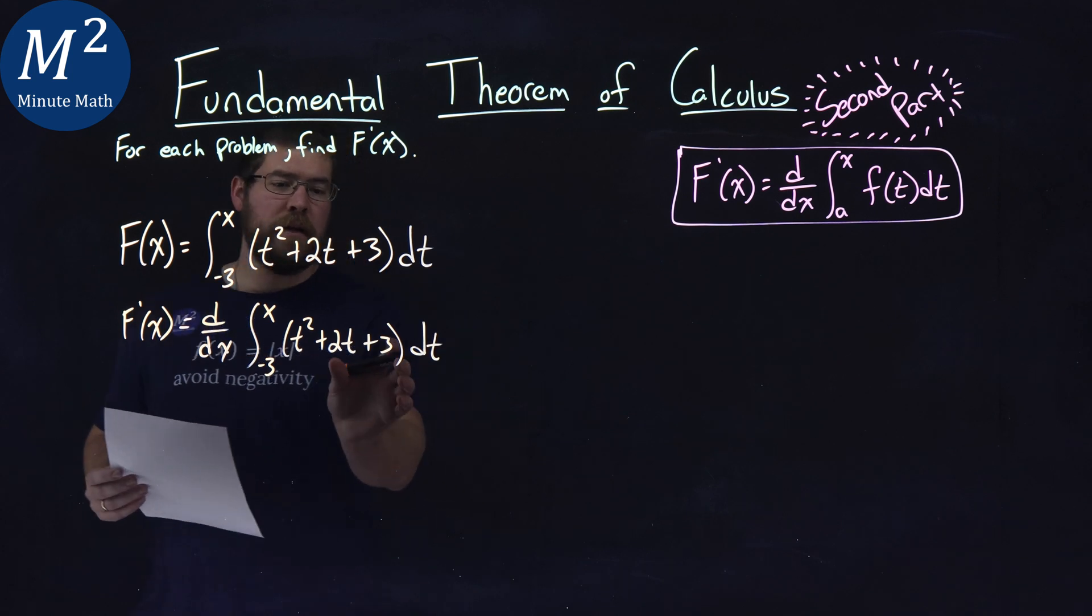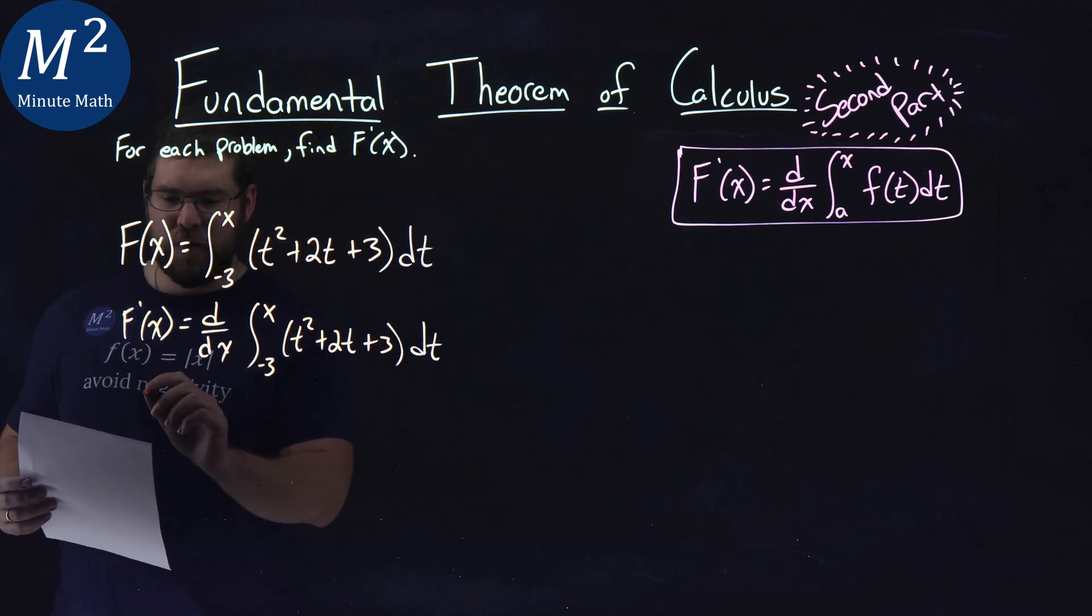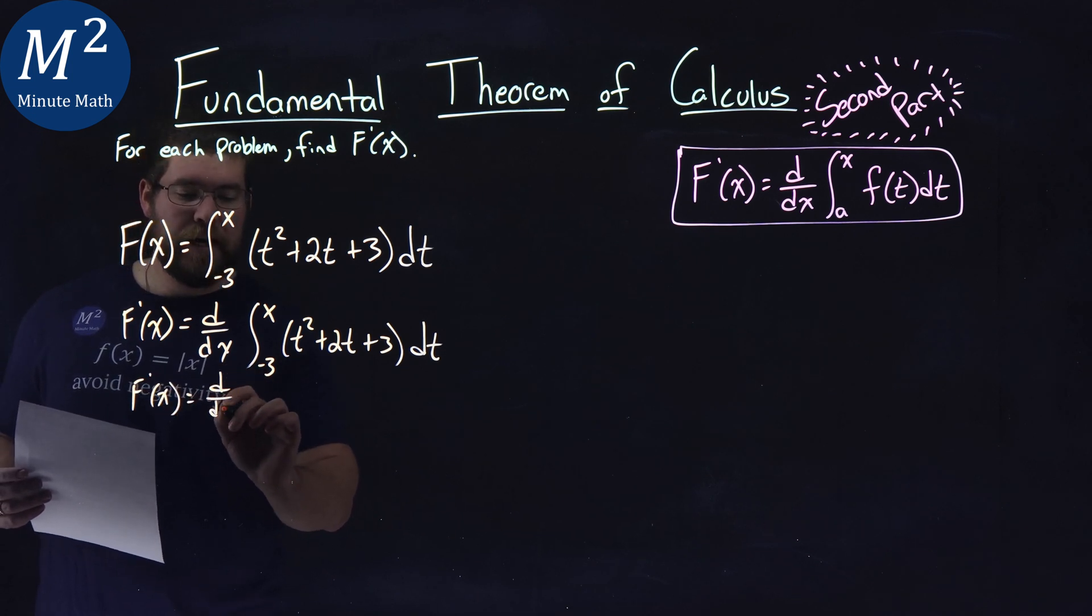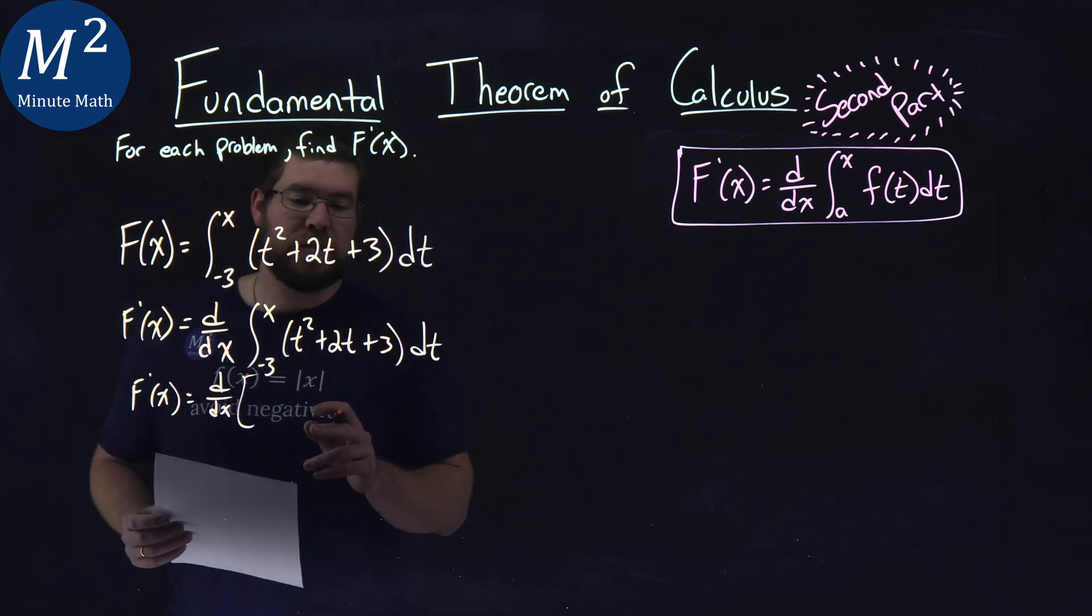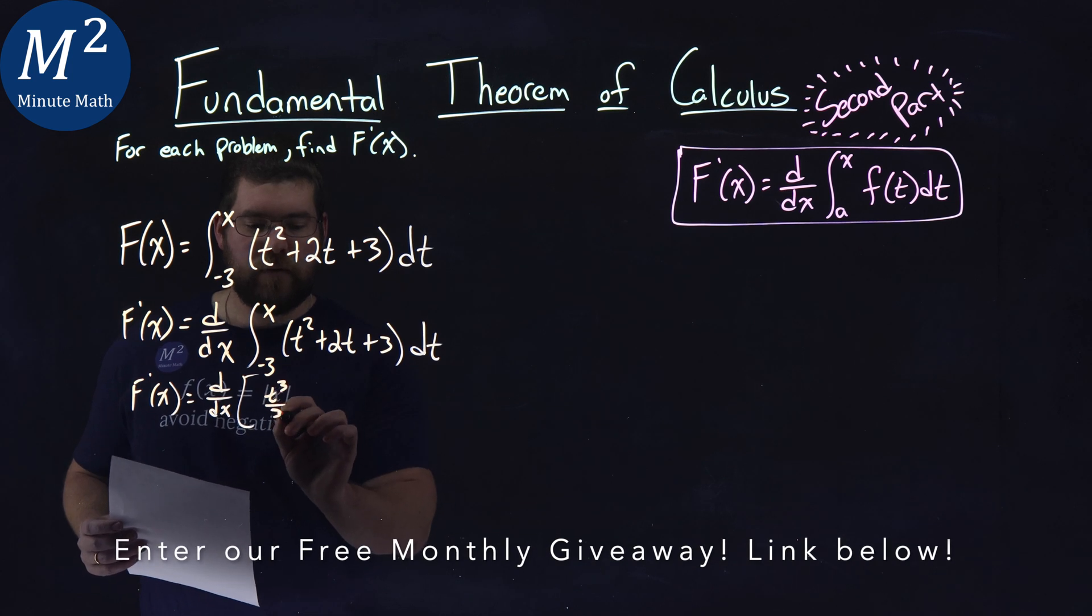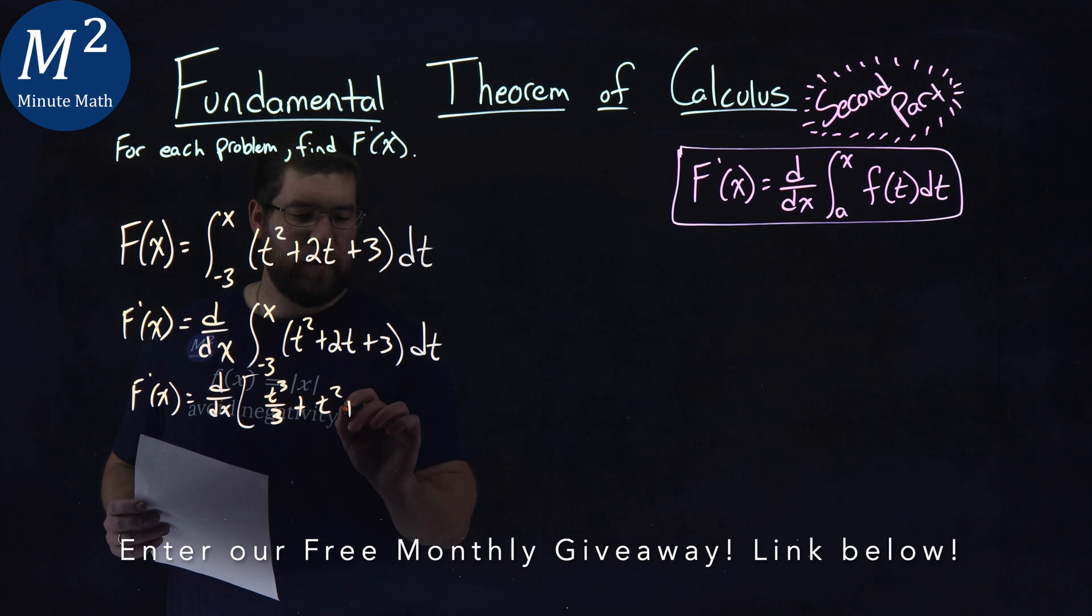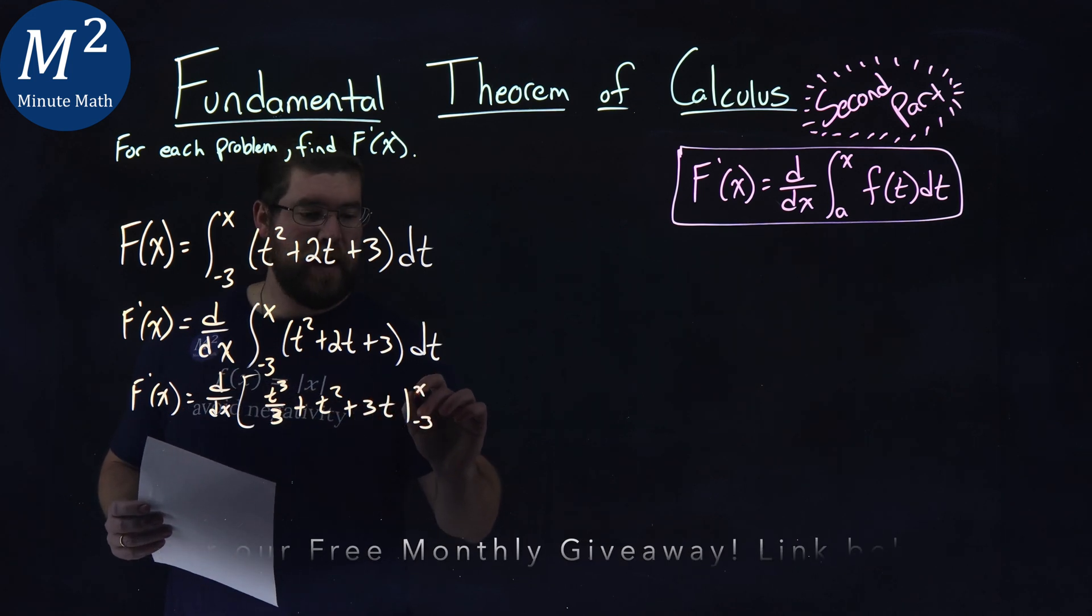The first step here is we need to find the integral of what's inside our integrand. So we have f prime of x again equals d over dx. What's the integral of t squared plus 2t plus 3? We're going to have t to the third power over 3 plus t squared plus 3t, and we're integrating that from negative 3 to x.